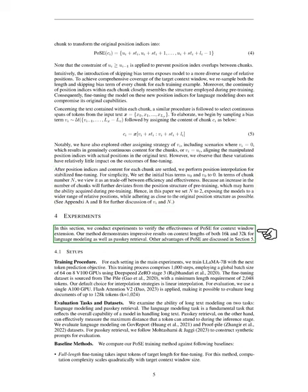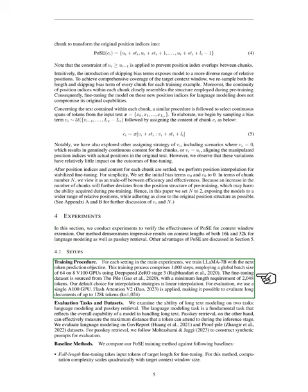In the next section, we discuss the experiments conducted to verify the effectiveness of PoSE for context window extension. Our method showed impressive results on context lengths of both 16K and 32K for language modeling as well as PASSKEY retrieval. We trained the model with the next token prediction objective over 1,000 steps, using a global batch size of 64 on 8 V100 GPUs. The fine-tuning dataset was sourced from the Pile, with a minimum length requirement of 2,048 tokens. For evaluation, we used a single A100 GPU.